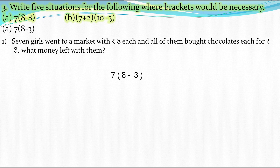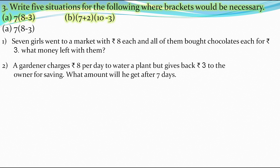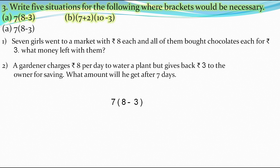The second situation: a gardener charges rupees 8 per day to water a plant but gives back rupees 3 to the owner for saving. So we subtract 3 from 8. For what amount will he get after 7 days? We multiply the resulting expression by 7. This also matches the given expression 7×(8−3).